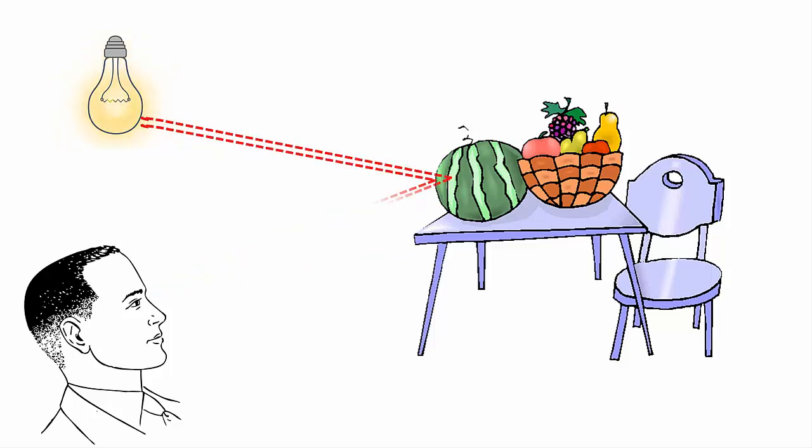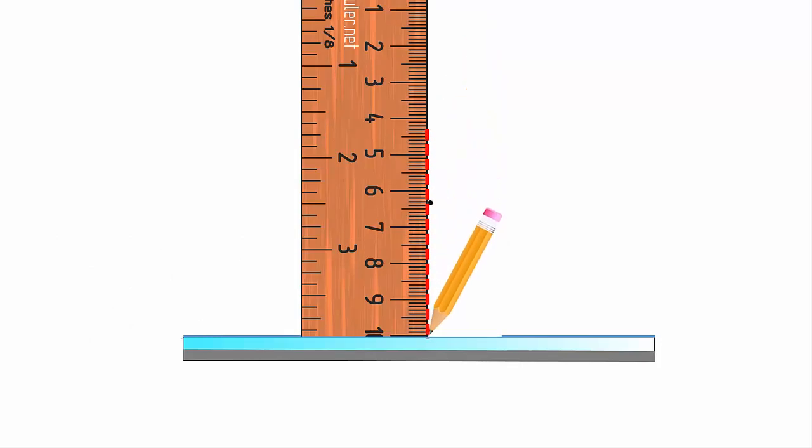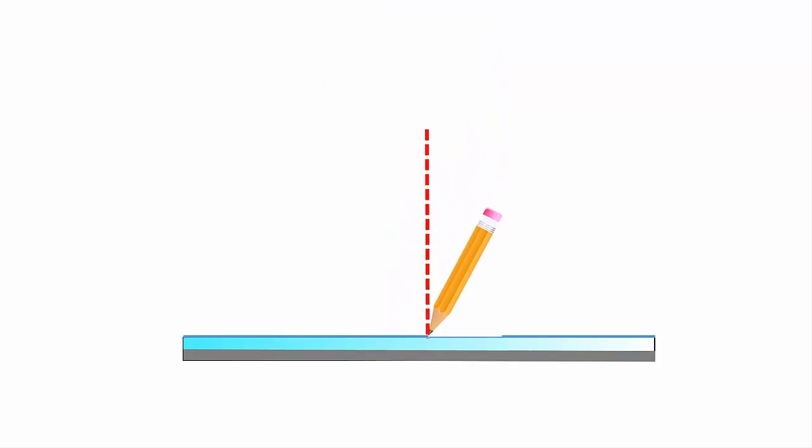Let us understand by this activity. Place the mirror vertically on a sheet of paper and trace its edge. Draw a perpendicular line at O which makes a right angle to the edge of the mirror. This dashed line represents a normal.